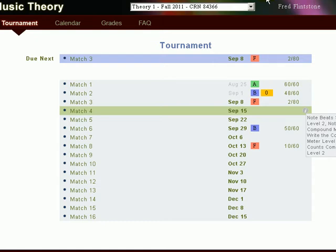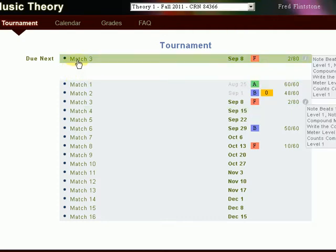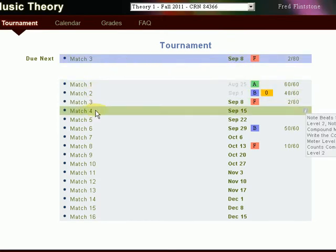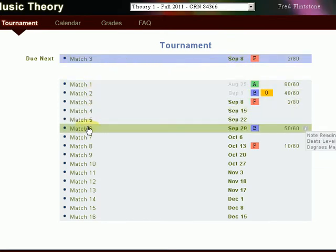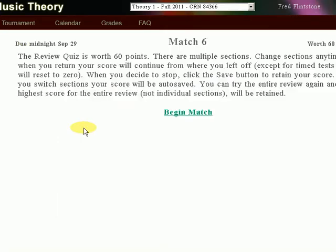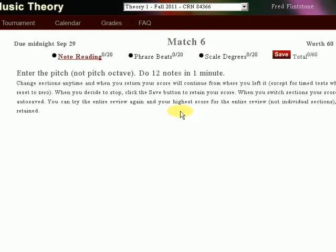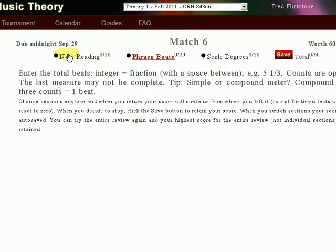When I entered the tournament I can see what is due next, which is Match 3 due on September 8th. Right now I'm going to practice Match 6. I've done Match 6 before and got 50 out of 60 points, that's a B, and that's due on September 29th. I'm going to try it again right now.